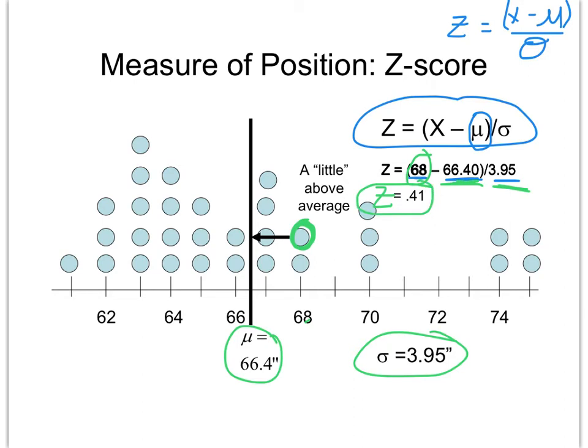Remember, a z-score of 0 means there's not much difference from the mean. If we have a z-score of 0.41, that's actually a really close score. 68 is not too far away from 66.4, so it's a good z-score, meaning the person is quite average with their height.